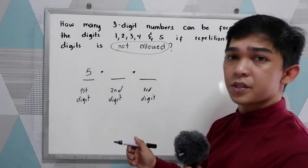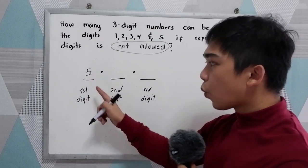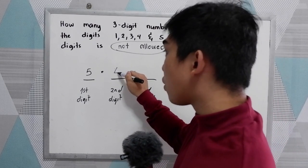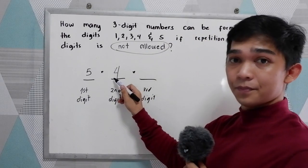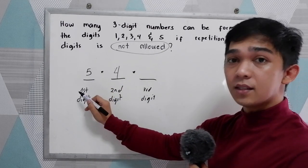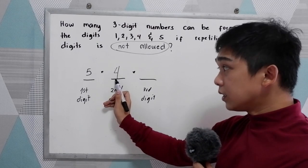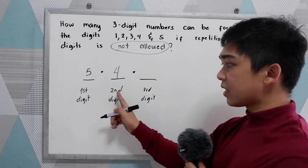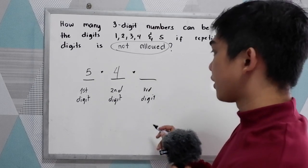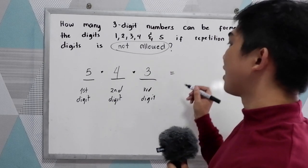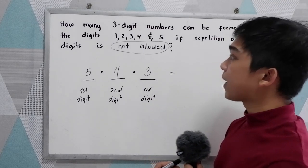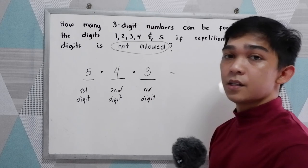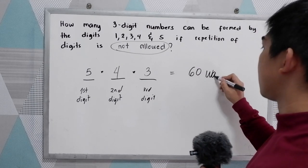There are 5 possible numbers for the first digit. If we use 1 digit as our first digit, and repetition is not allowed, there are only 4 digits available left. Then, since we already used 2 digits for the first and second positions, there are 3 available digits for the third digit. Multiplying: 5 times 4 is 20, times 3 is 60. So there are 60 ways.